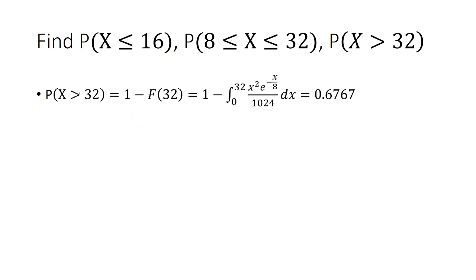And then finally, you want to find the probability that x is greater than 32. Well, you can use a complement for that. That's the same thing as saying 1 minus the probability that x is less than or equal to 32, which is 1 minus f of 32.